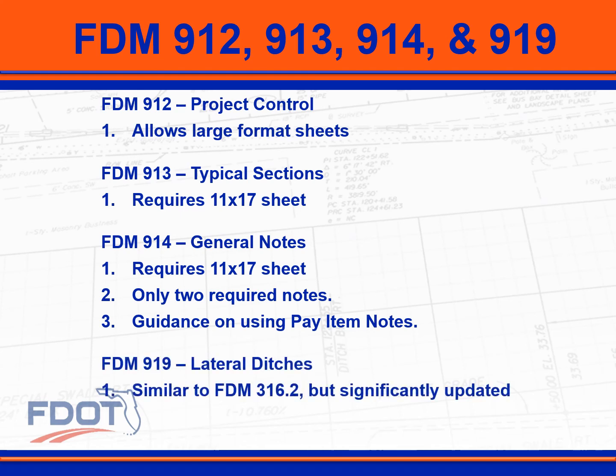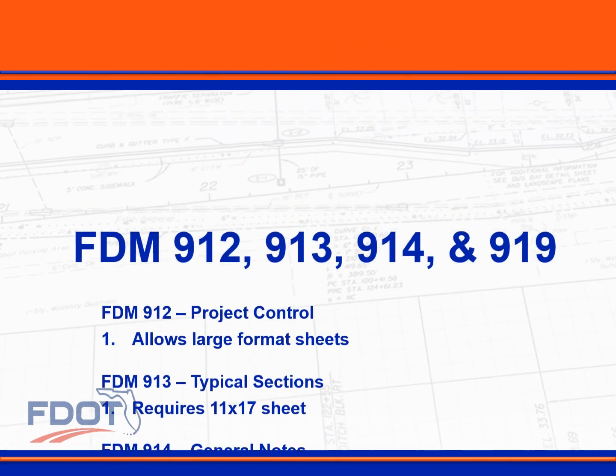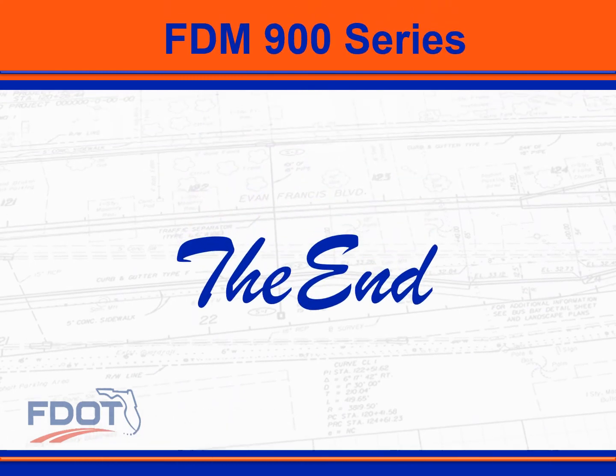FDM 919 is the last of four drainage related chapters. Though similar to FDM 316.2, plan requirements have been updated based on a model-centric design approach. And that concludes the update to the FDM 900 series.